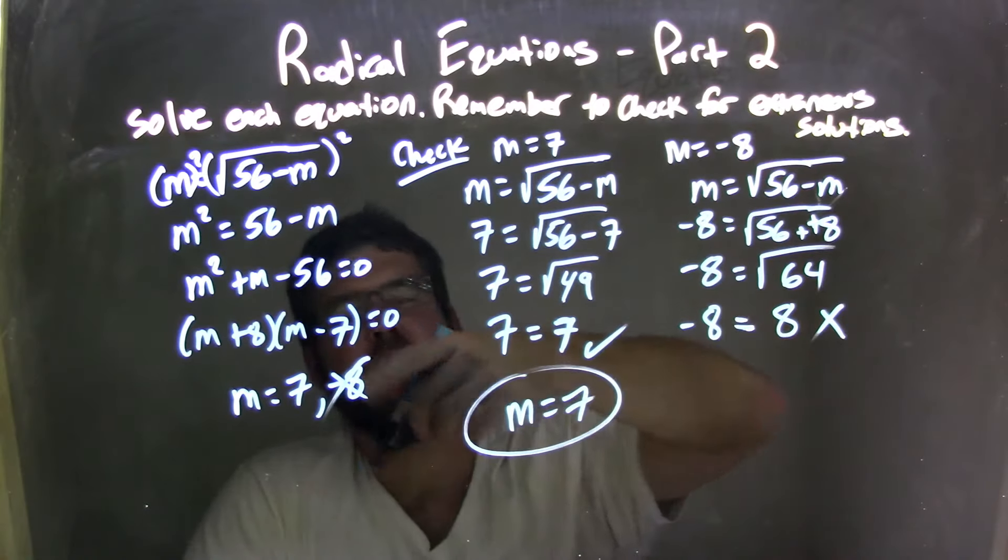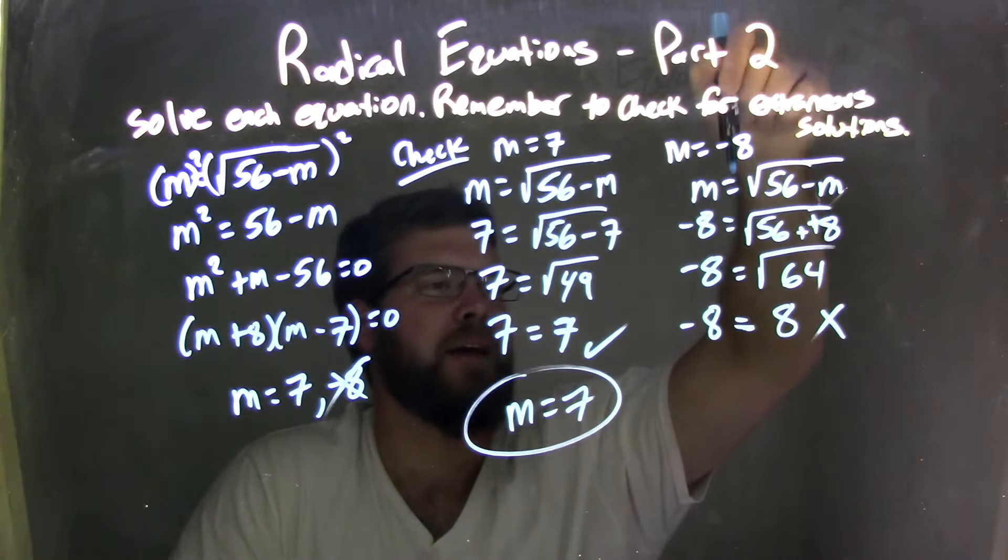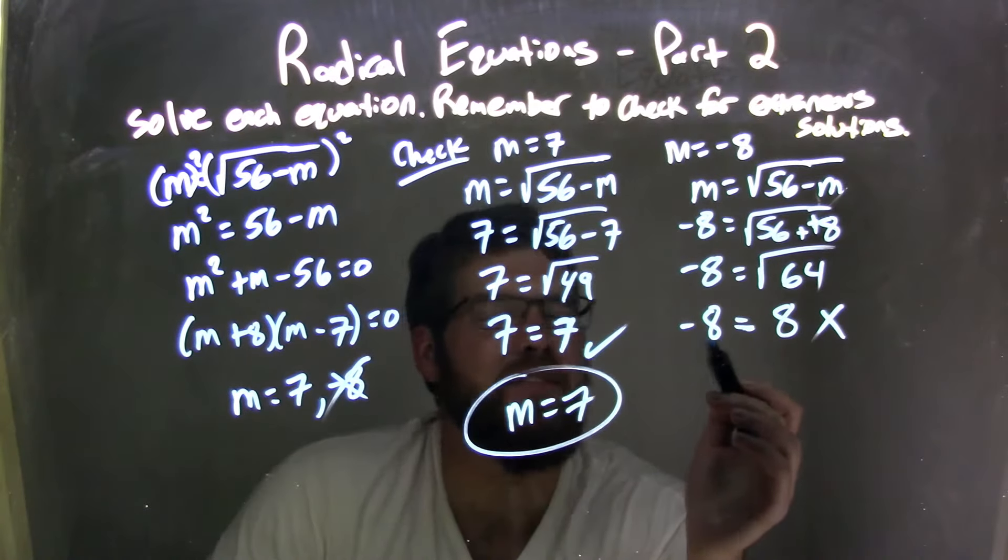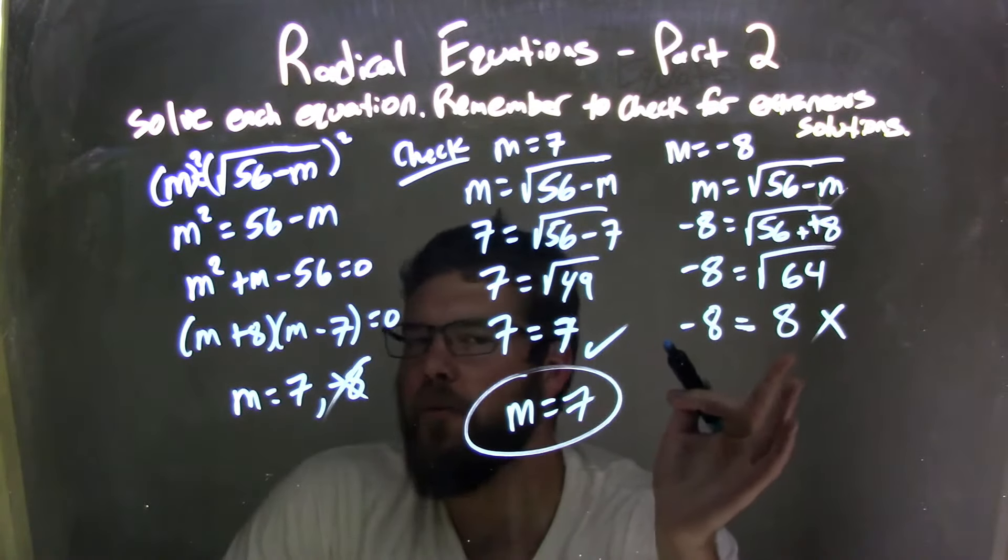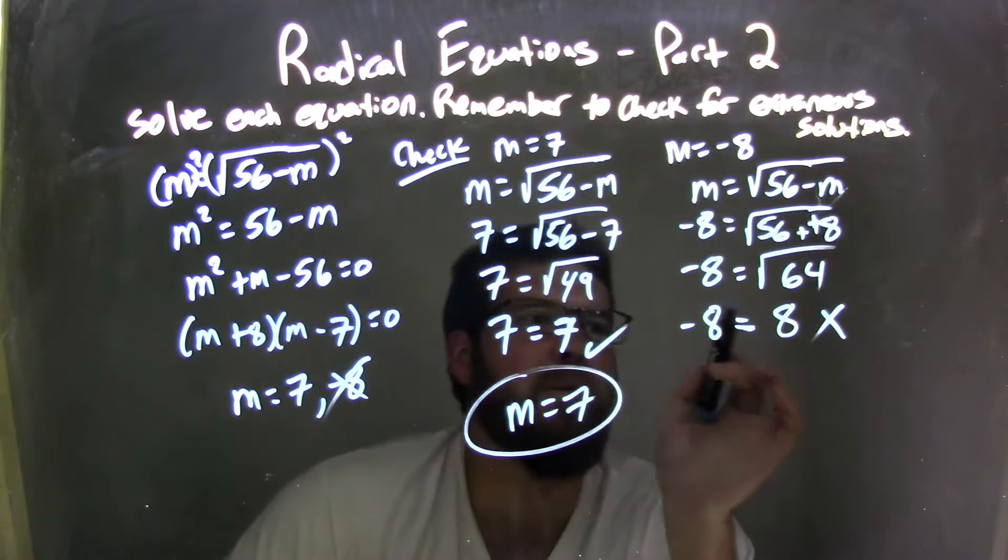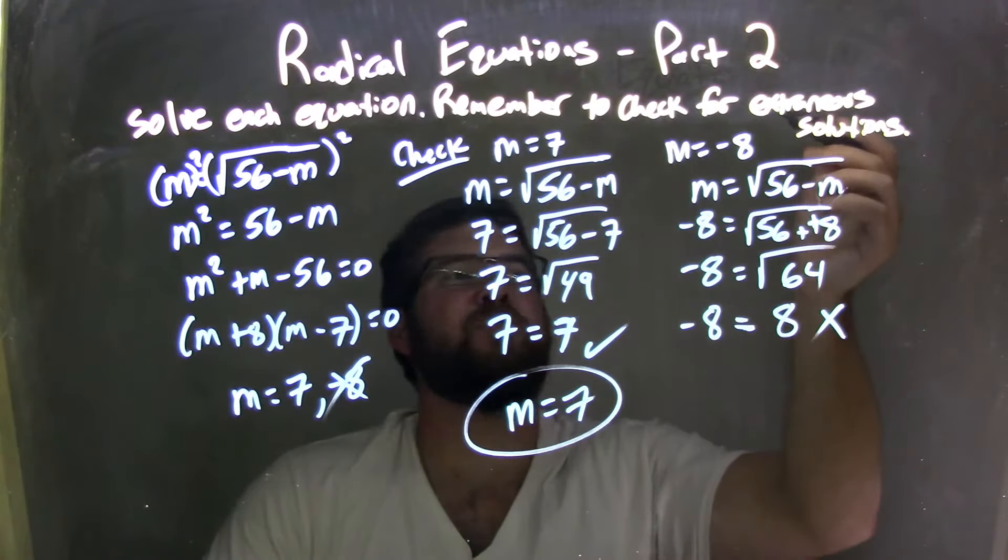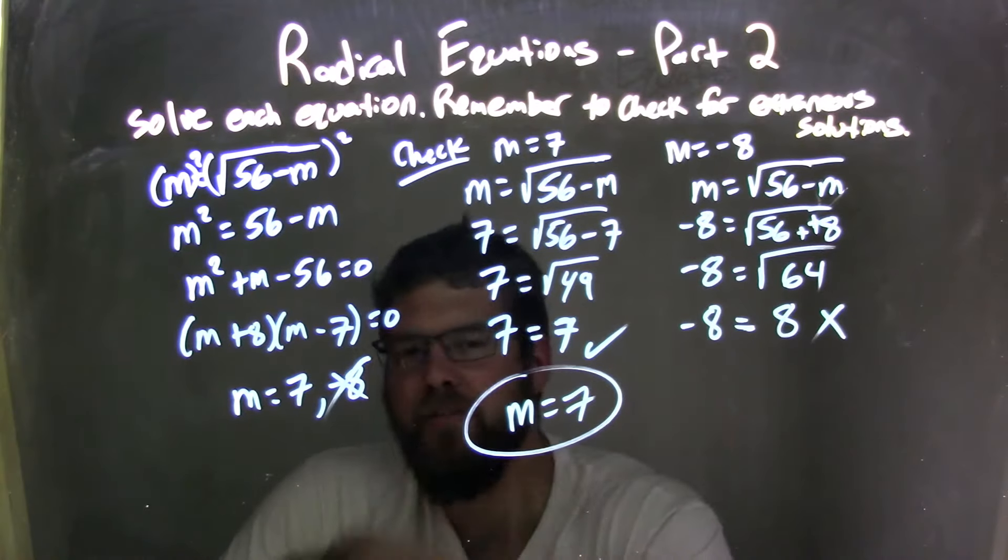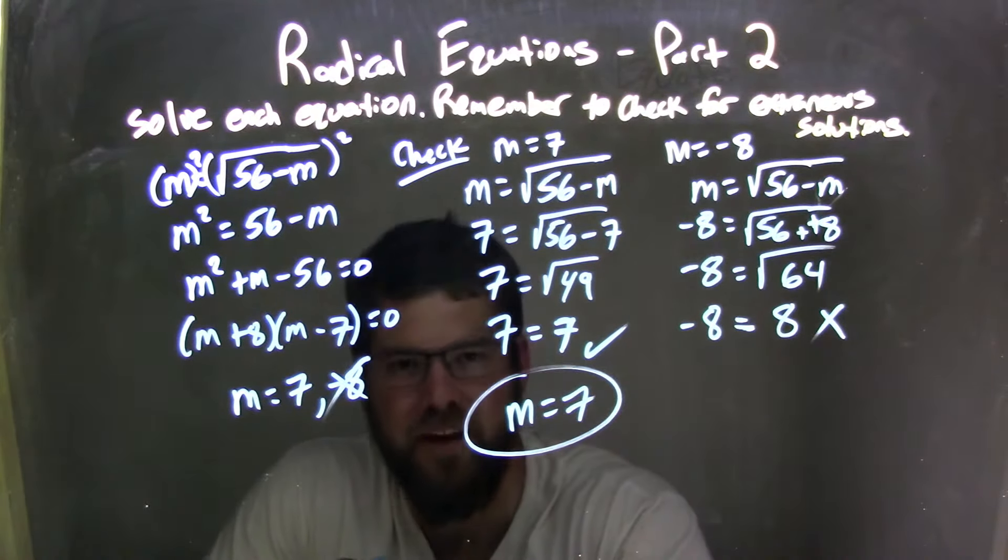So let's go check negative 8. There were two of them. We checked the negative 8, we plugged it back in, drilled down, simplified both left and right-hand side. Left with a negative 8 equals positive 8. Be careful, they're not equal. Not equal. So therefore, negative 8 is my extraneous solution written right there. And so my only true solution and the final answer here is m equals positive 7.